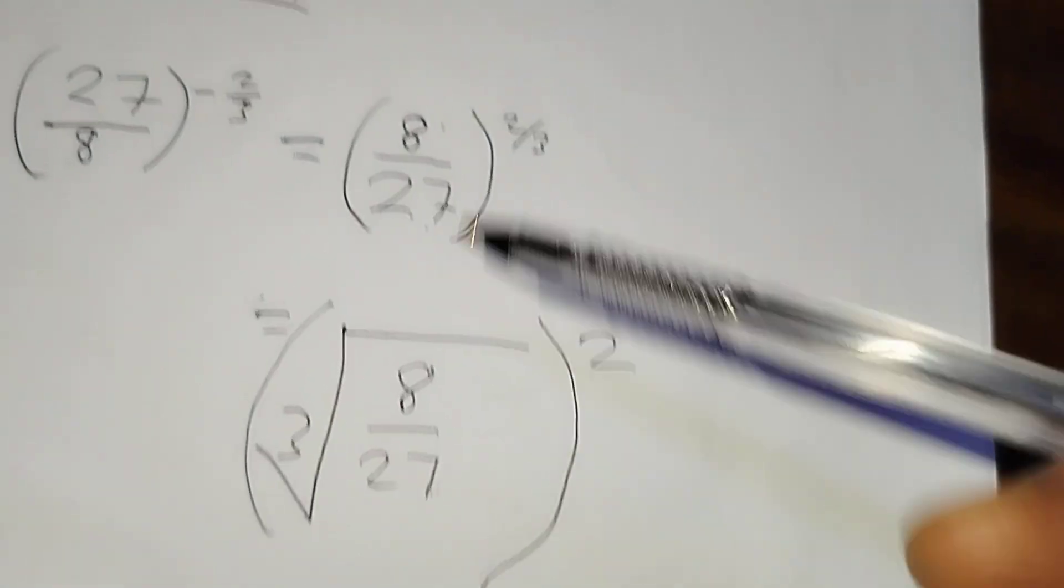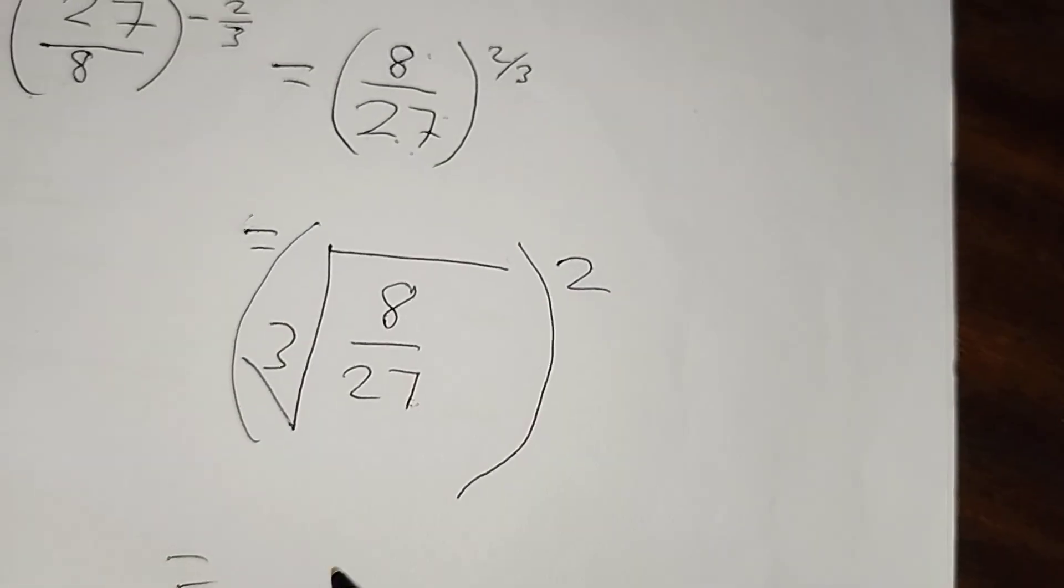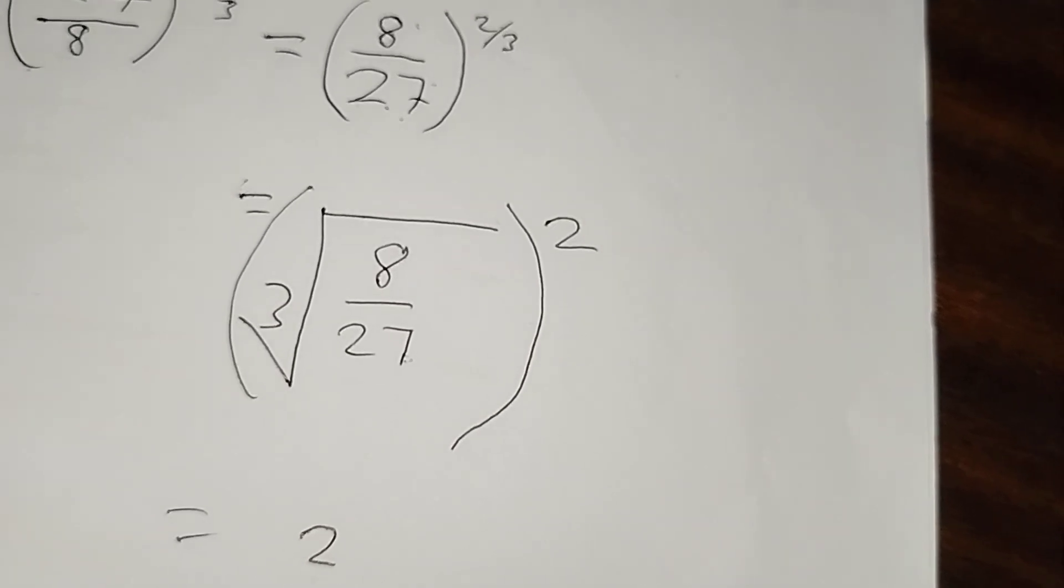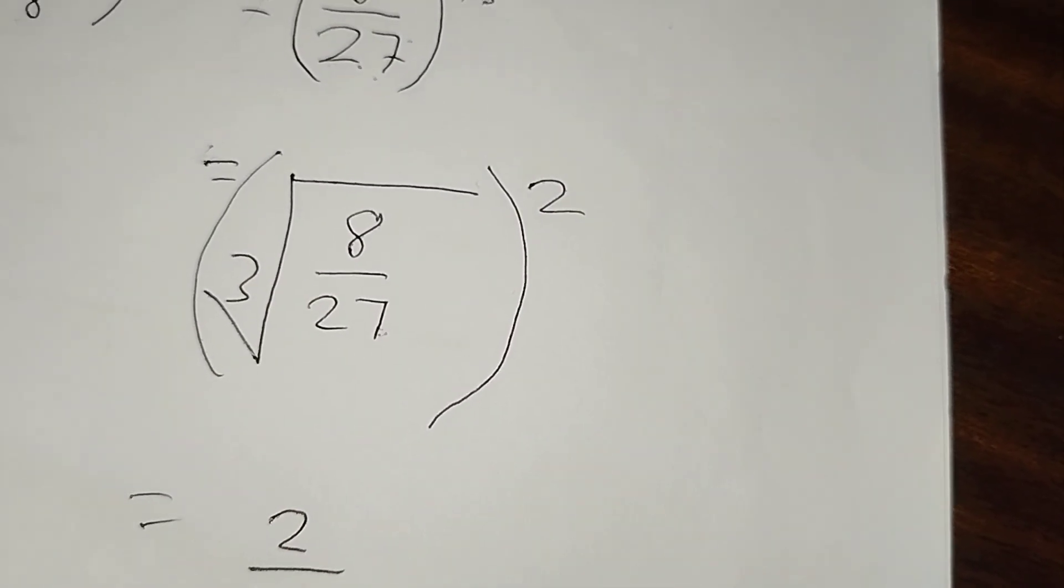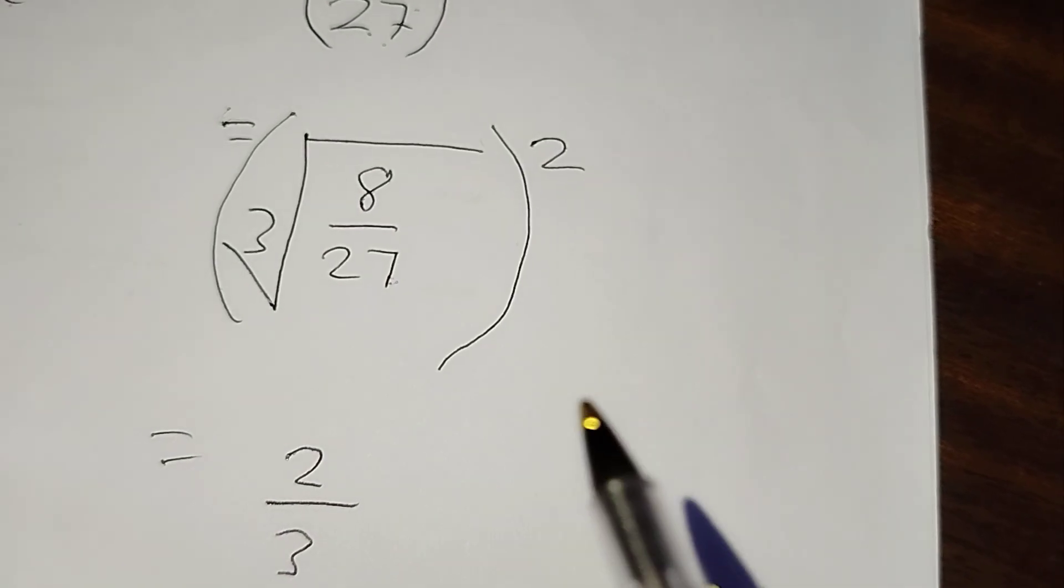So the cube root of 8 is 2. The cube root means the number which multiplies itself three times to give me 8. The cube root of 27, that's 3.